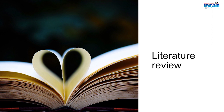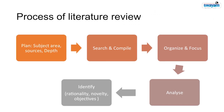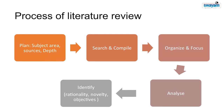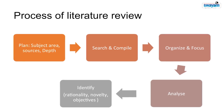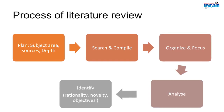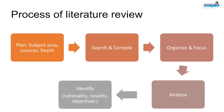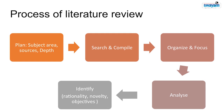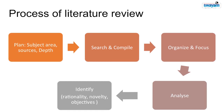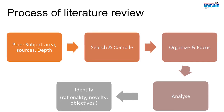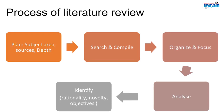Let me summarize how we do the literature review. First, you plan the subject area, sources, and depth. Then search and compile — that is the second step. Organize and focus: organize all the literature and focus to your theme and focal point. Then analysis, and at last you identify rationality, novelty, and pinpoint your aim and objectives. This is the way the literature review process goes.